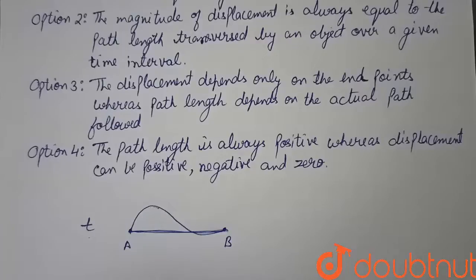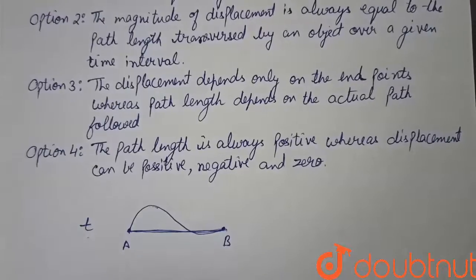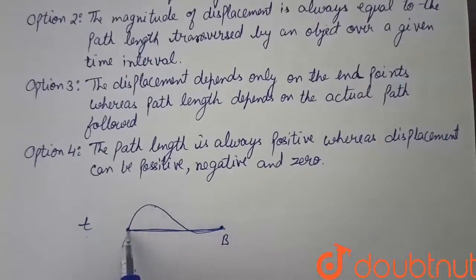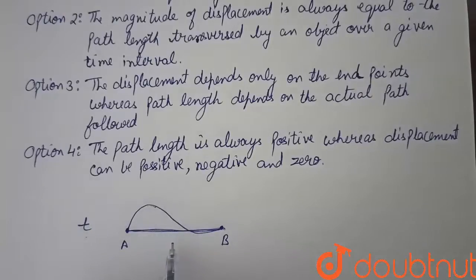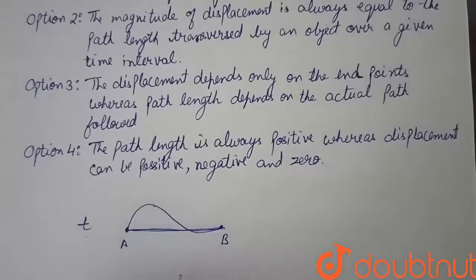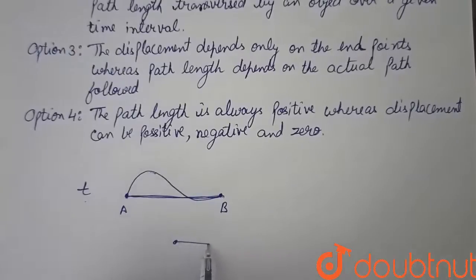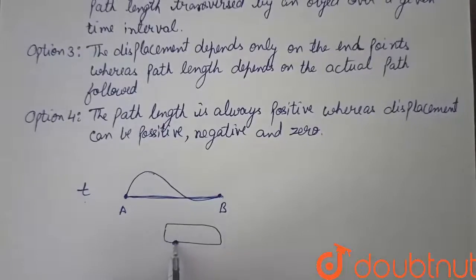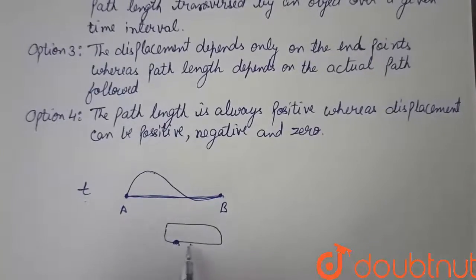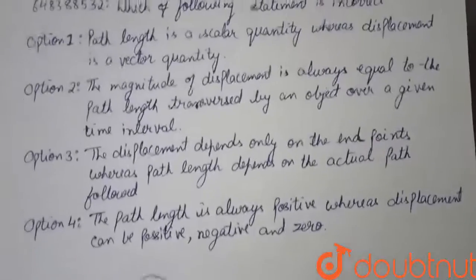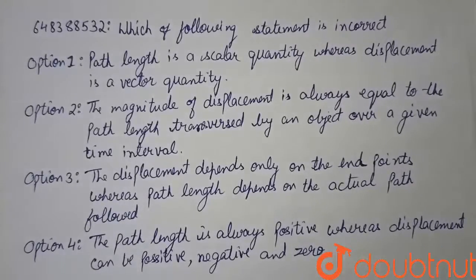Option 4 states that path length is always positive whereas displacement can be positive, negative or zero. This option is also correct: path length is always positive, but displacement can be zero if you start and end at the same point, negative if moving in the negative direction, or positive otherwise. Therefore, option 2 is the only incorrect statement in this question.